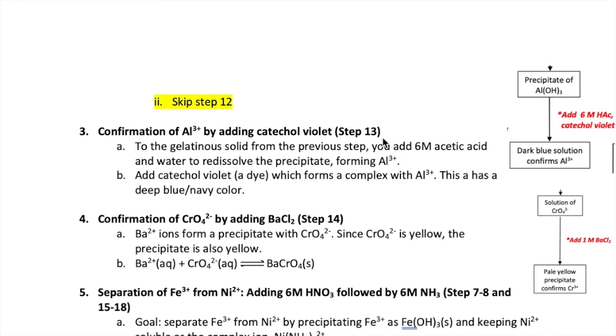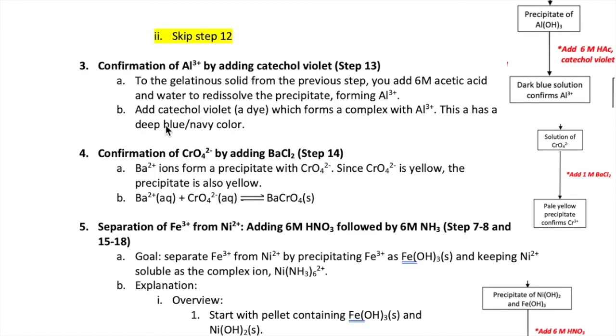What you want to do is go directly to step 13, and what you're going to do here is you're going to redissolve the pellet by adding acetic acid. That allows the aluminum to be freed as the aluminum three plus ion. We then add the reagent catechol violet, which forms a deep blue or navy colored complex with the aluminum ion. That would be your evidence that aluminum is present.